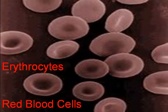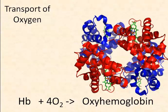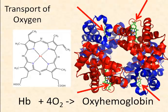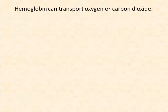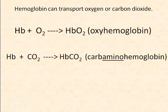Red blood cells, also known as erythrocytes, transport oxygen on their surface. Four oxygen molecules combine with hemoglobin at the iron-based heme group. Hemoglobin can transport oxygen or carbon dioxide. When transporting oxygen, it's called oxyhemoglobin; when transporting carbon dioxide, it's carbaminohemoglobin. Both molecules form weak bonds with hemoglobin, which is important because carbon dioxide and oxygen need to be able to diffuse into the lung alveoli and body tissues respectively.